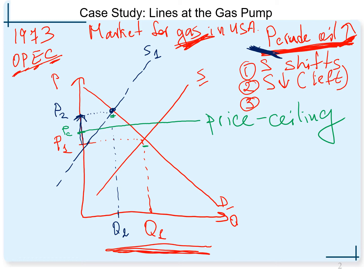At the price ceiling level, going over to meet the supply curve gives us quantity supplied. At that same price, meeting the demand curve gives us quantity demanded. Our quantity supplied is small while quantity demanded is pretty high. What we get on the market is a shortage — this triangle represents the shortage, and the difference between quantity supplied and quantity demanded is the shortage in units.